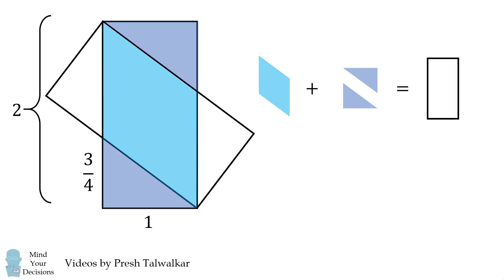The rectangle has an area equal to 2 times 1, which is equal to 2. Two of these triangles will have an area equal to 3 over 4 multiplied by 1, which is equal to 3 over 4.